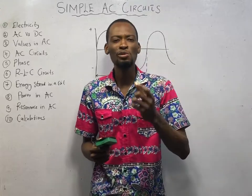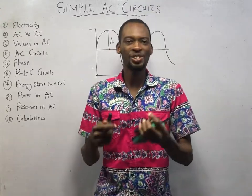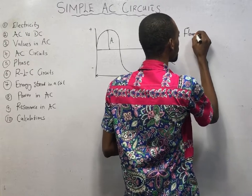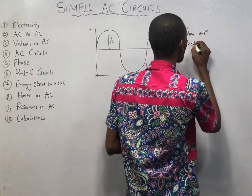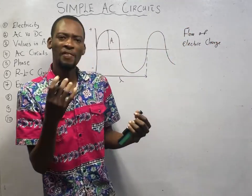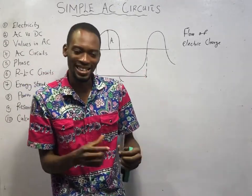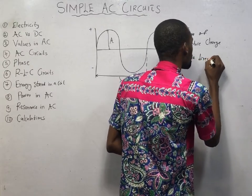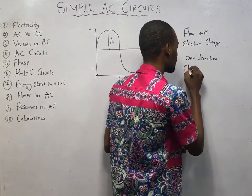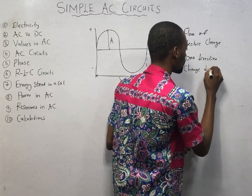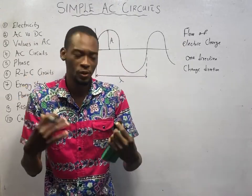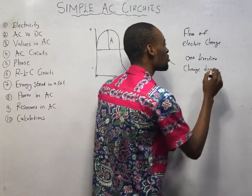From waves, let's take a look at electricity. Electricity is simply the flow of electric charge. Now, electric charges can flow in one direction, or they can change direction periodically. When electric charges flow in only one direction, the current produced is referred to as DC.